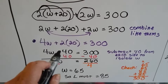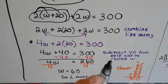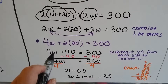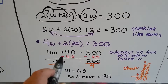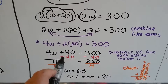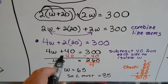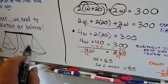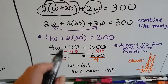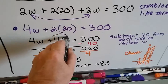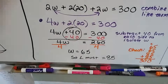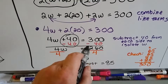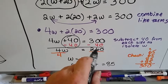Because we have plus 40, we subtract 40 from each side to isolate W. Subtracting 40 creates a zero pair and we discard it. We end up with 4W equals 300 minus 40, which is 260. So 4W = 260.